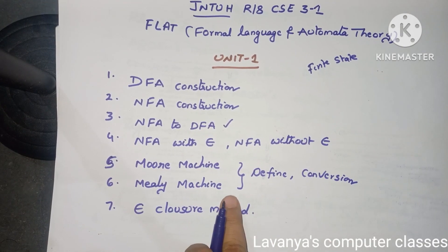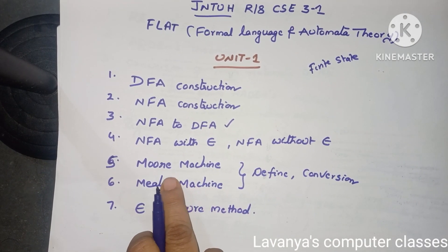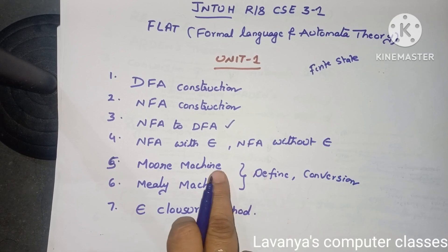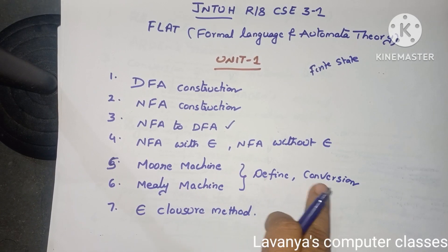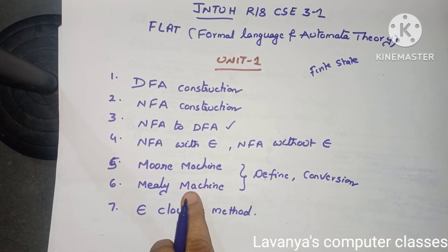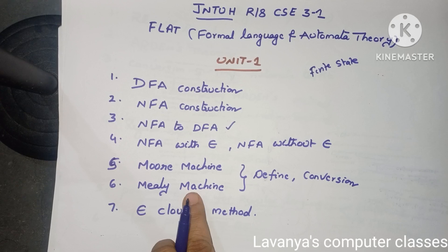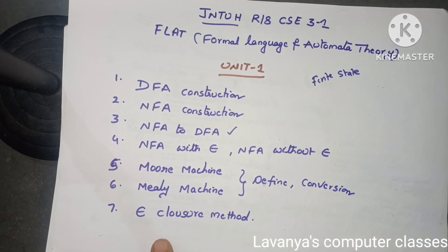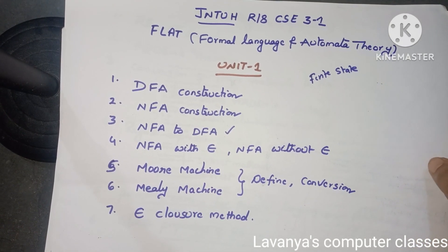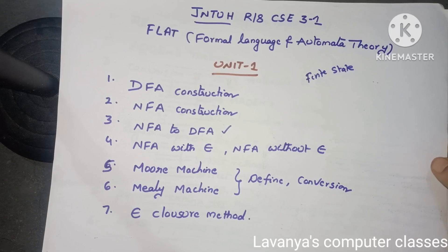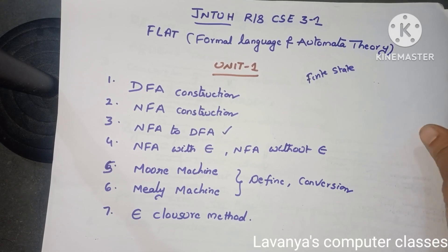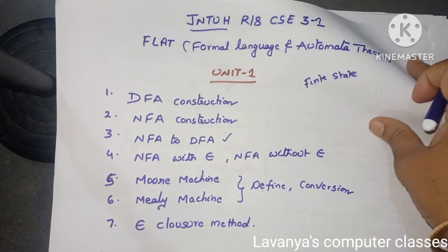Next, these are also very important: Moore machine and Mealy machine. Define Moore machine and conversions — conversion from Moore to Mealy machine or Mealy machine to Moore machine — and the epsilon closure method. These are the very important repeated questions in unit one.